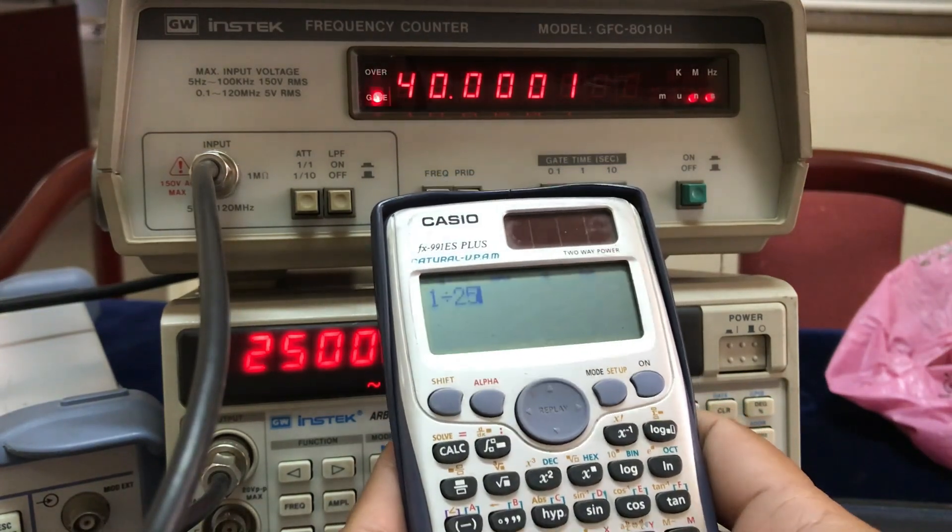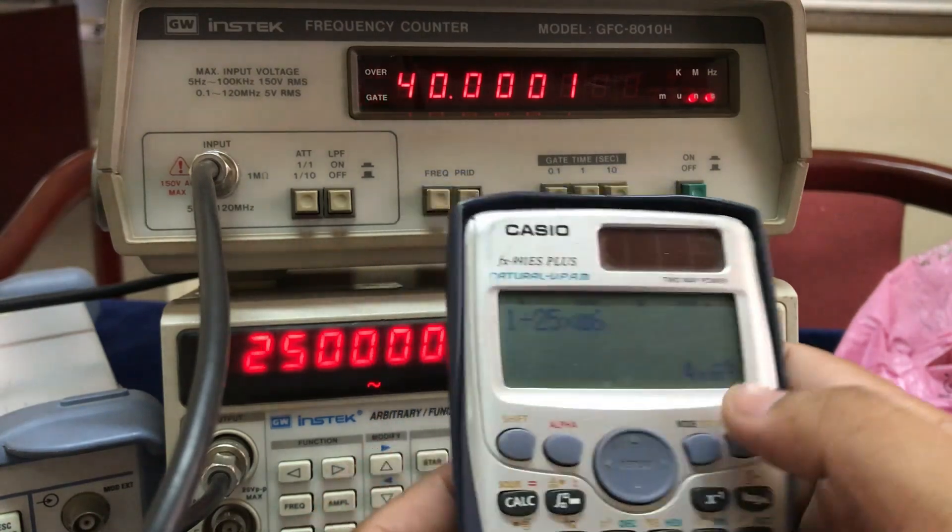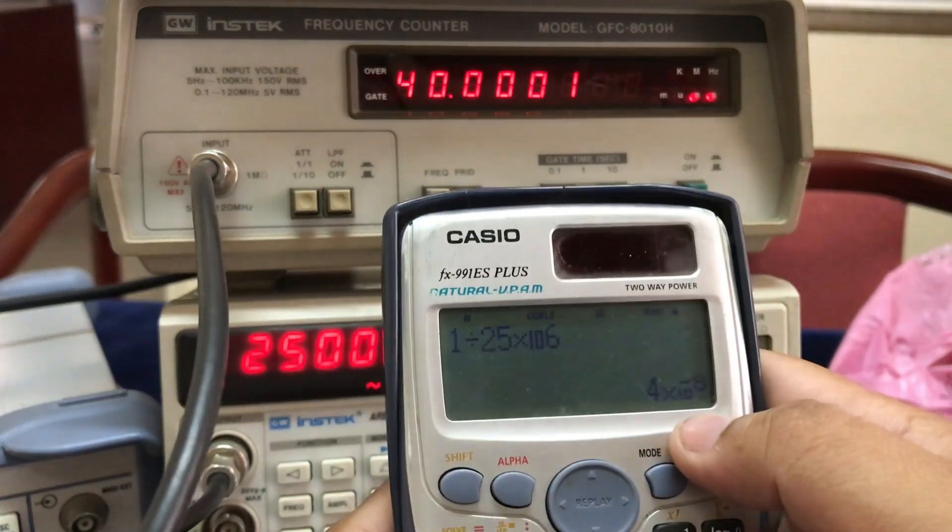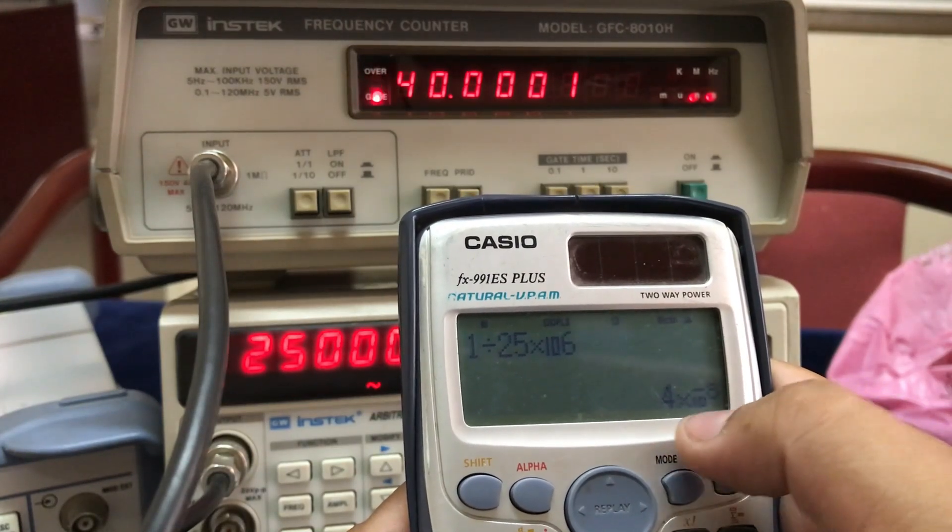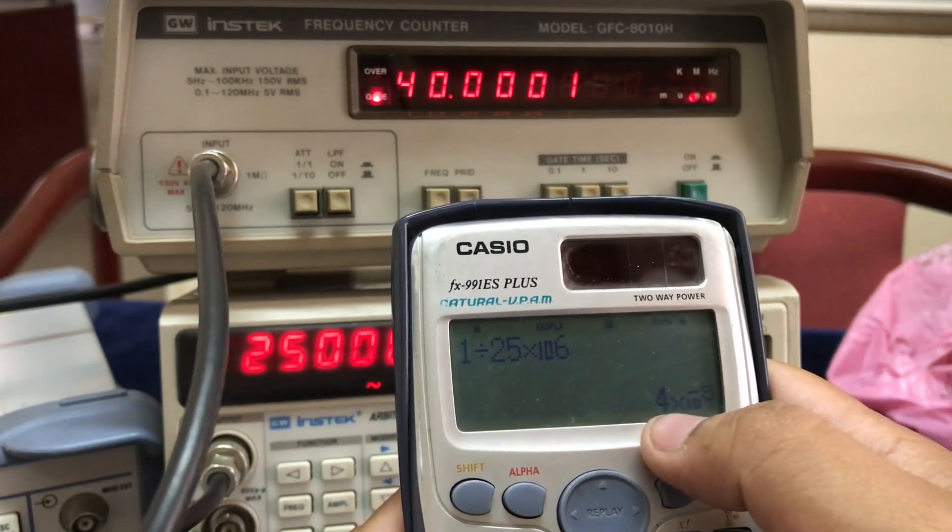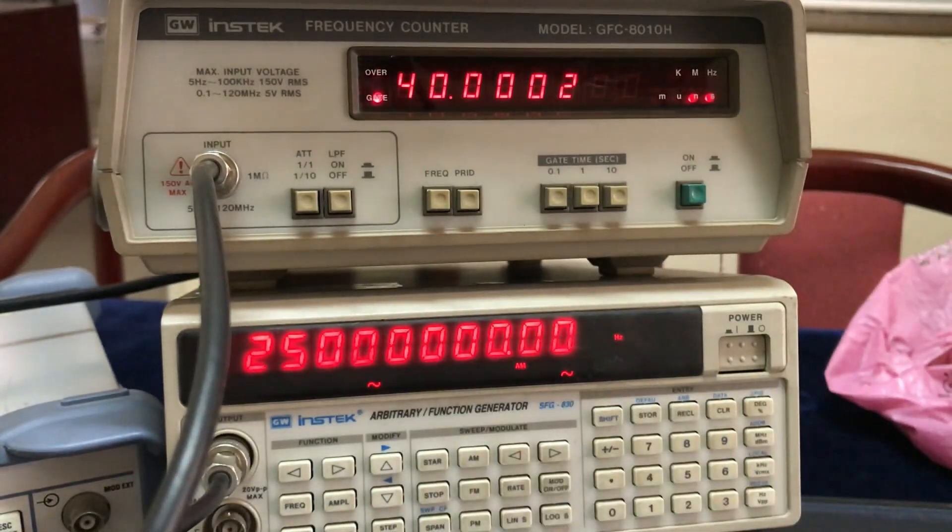That would give me around 40 nanoseconds, because if I move this one time it will be 40 times 10 to the negative 9, which is 4 times 10 to the negative 8. This is how you actually calculate the frequency and you can confirm it using your frequency counter.